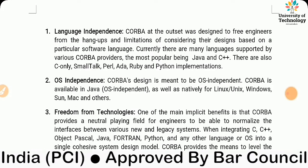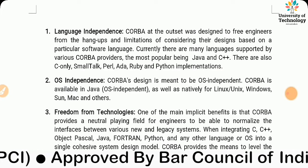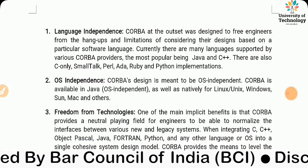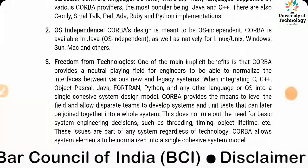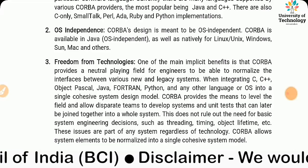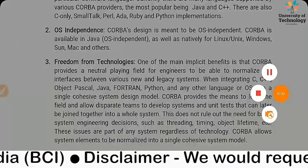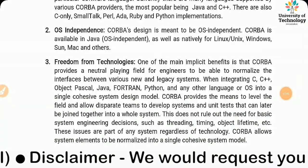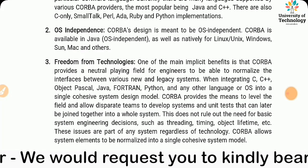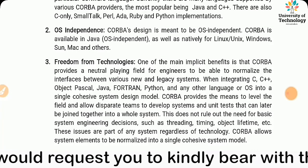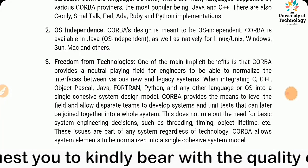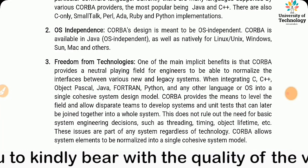OS independence: CORBA's design is meant to be OS-independent. CORBA is available in Java as OS-independent, as well as natively for Linux, Unix, Windows, Sun Solaris, and others. Freedom from technologies: one of the main implicit benefits is that CORBA provides a neutral playing field for engineers to normalize the interfaces between various new and legacy systems.